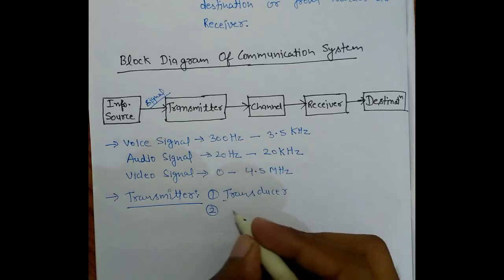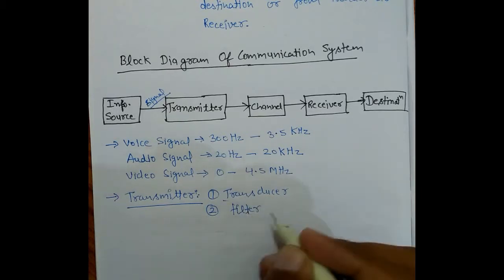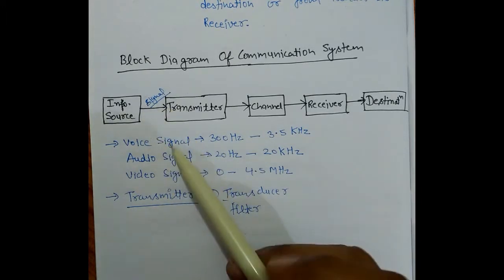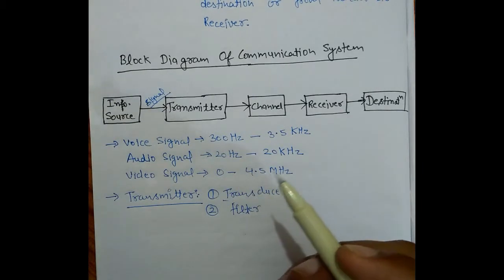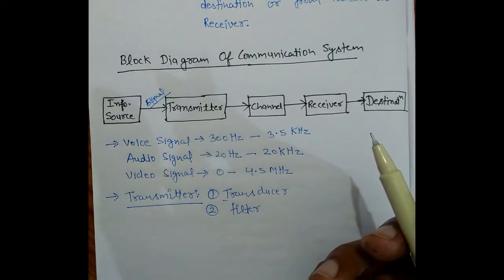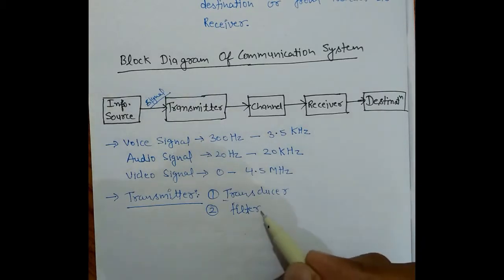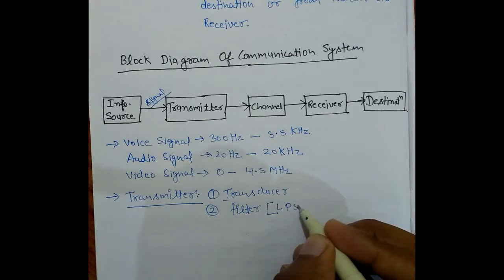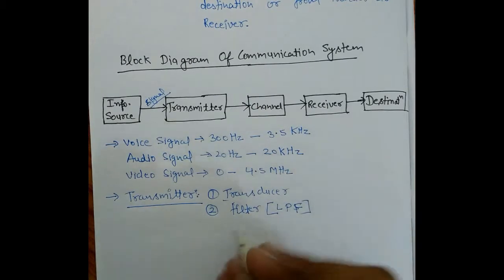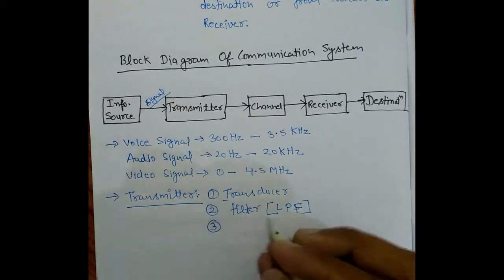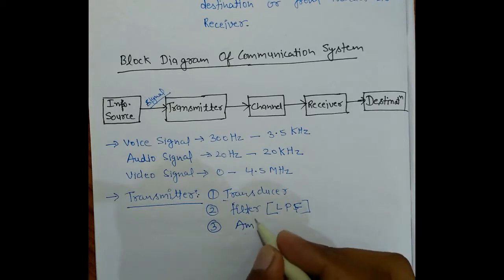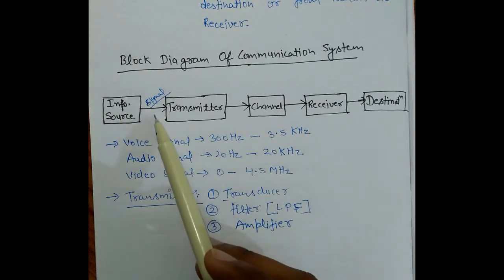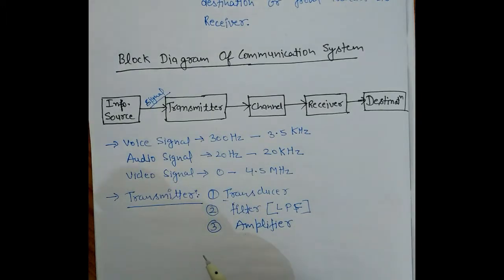Next, we use a filter in the transmitter. When the source feeds the signal into the transmitter, unwanted surrounding noise comes with it, so we use a filter to remove it. Since the message signal is at low frequency, we use a low pass filter here. After that, we use an amplifier, which increases the power and amplitude of our message signal.